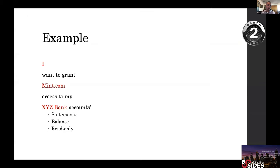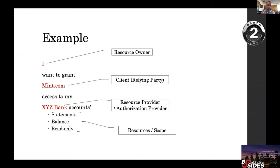From a terminology point of view in this example: I am the resource owner — I own my statements, which are the resources. I want to grant Mint.com, which is the client, access to my bank accounts. Citibank in this case is both the authorization provider and the resource provider. The resources I'm granting access to are called scope — what permissions I'm giving to Mint.com.